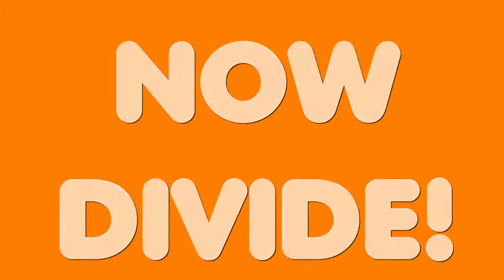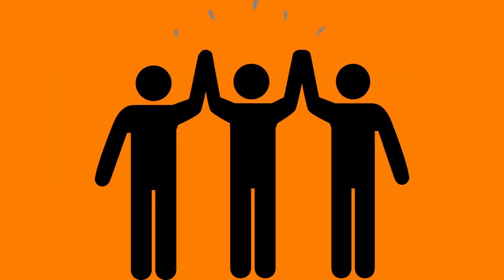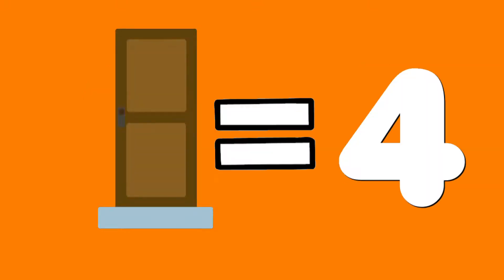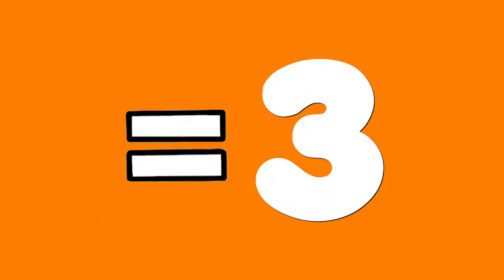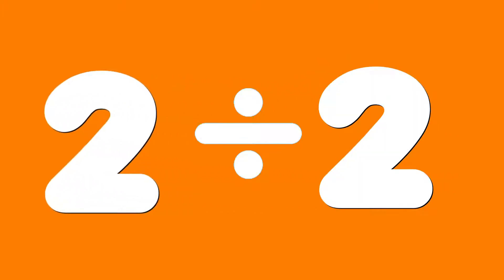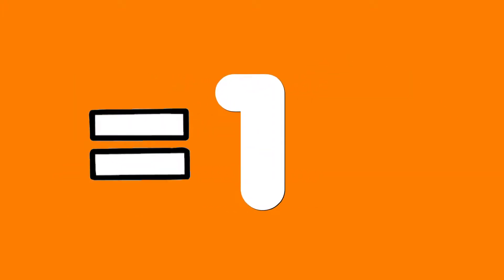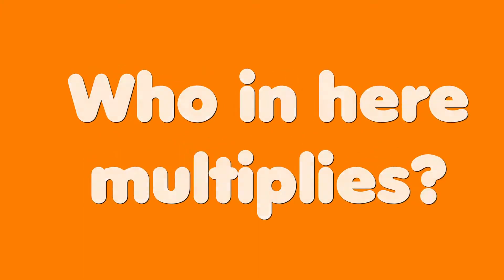Now divide: two out of ten is bringing five back, go ahead and just high five that class. Two out of eight brings four to the door, while two out of six is making three more. I got two out of four making two, my friends, and two out of two making one thing new again.